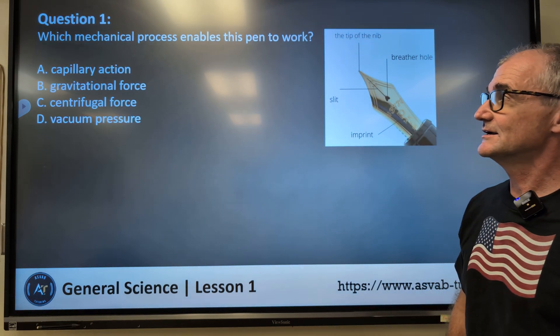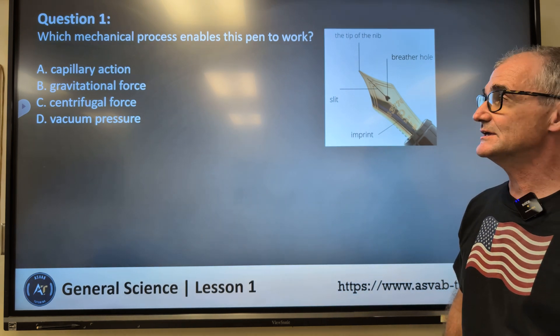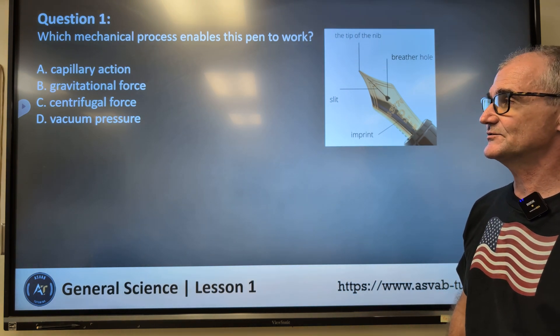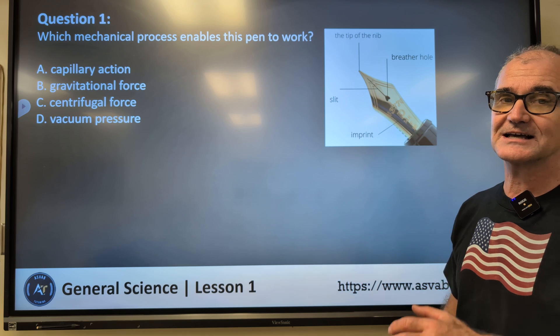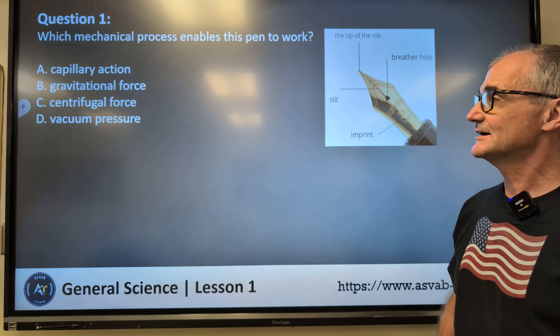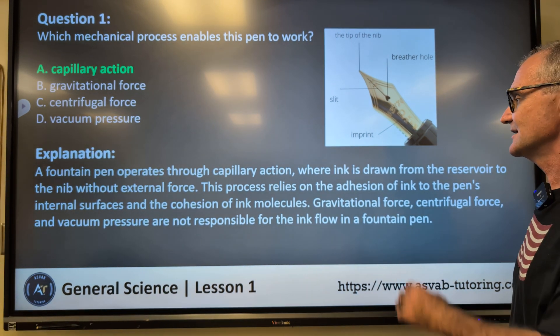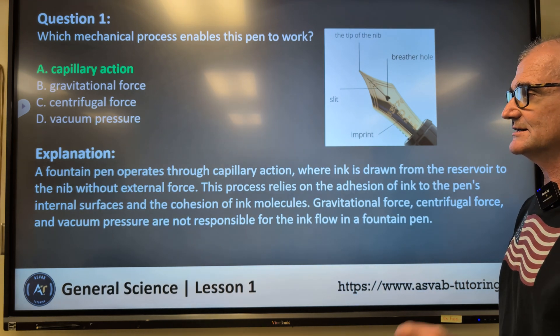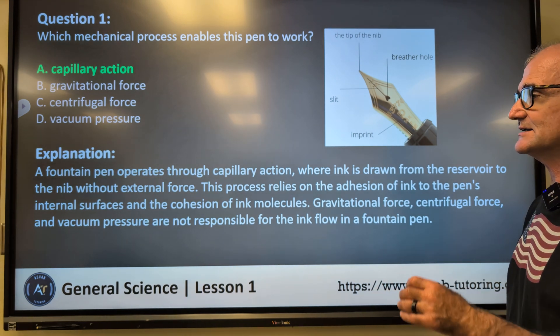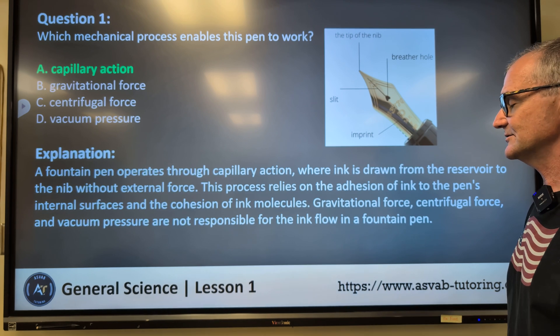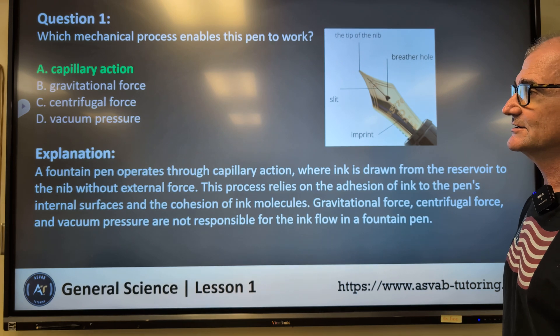Question number one, what mechanical process enables this pen right here to work? A, capillary action. B, gravitational force. C, centrifugal force. D, vacuum pressure. Pause the video. Do the best you can. Jot down your ideas, words you need to look up. Correct answer is A, capillary action. A fountain pen operates through capillary action, where ink is drawn from the reservoir to the nib without external forces. This process relies on the adhesion of ink to the pen's internal surfaces and the cohesion of ink molecules. Gravitational force, centrifugal force, and vacuum pressure are not responsible for the ink traveling.